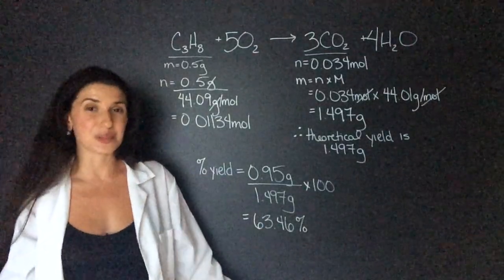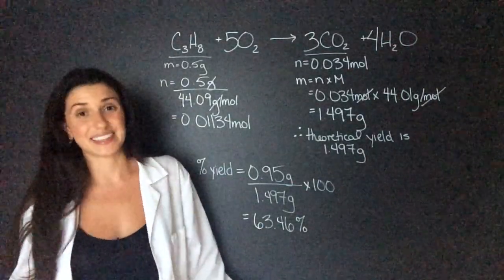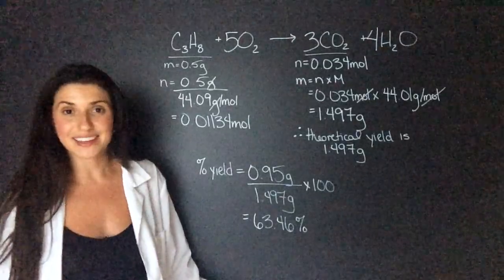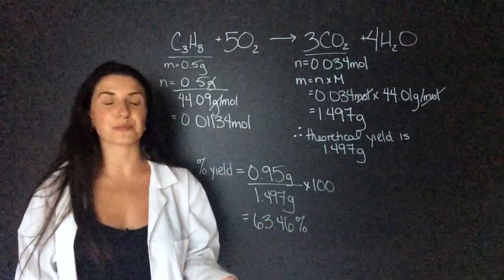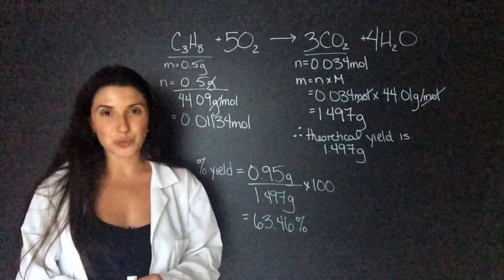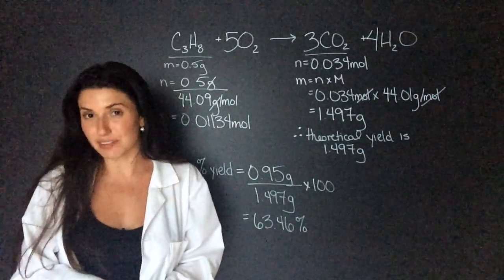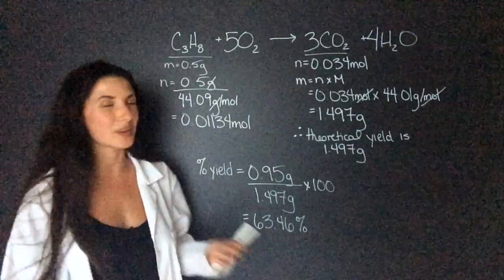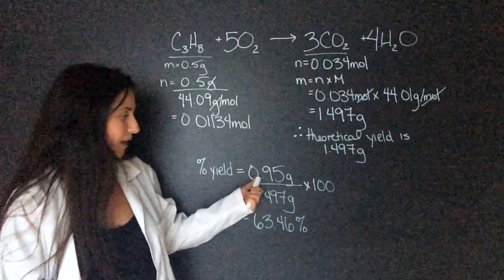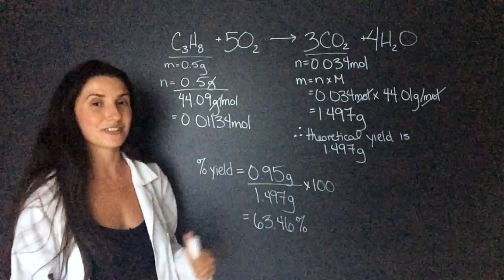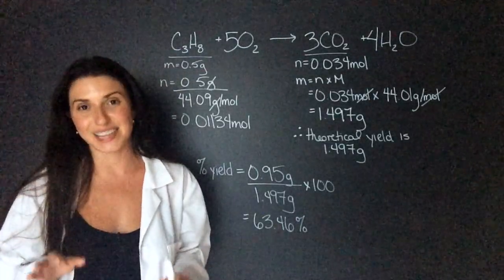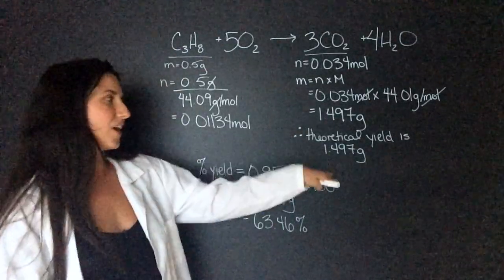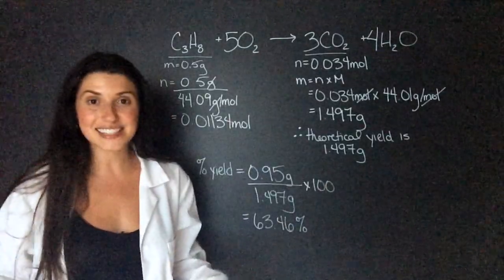The only thing to know is that this could be in moles, but the problem is in an actual yield they'll probably never give you moles. So that would actually be harder because you would have to take this 0.95 mass and convert that to moles. So I would always, to save yourself some work, just calculate the theoretical yield in mass, and that's it.